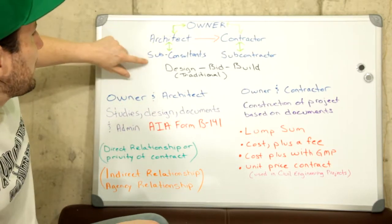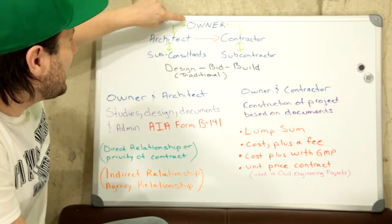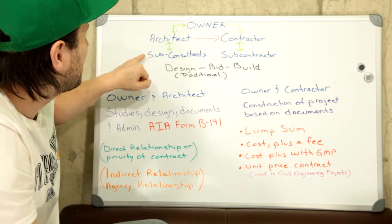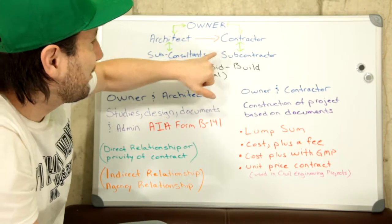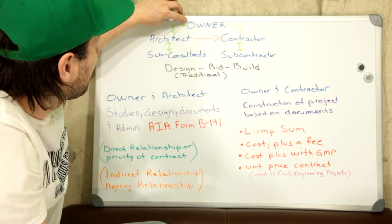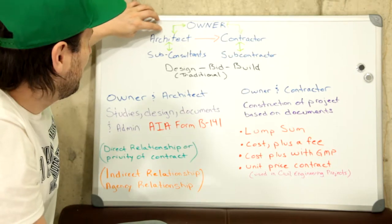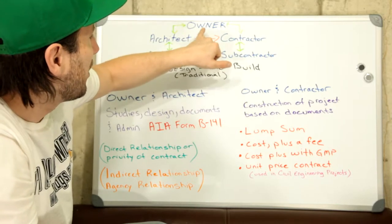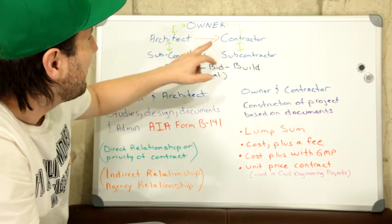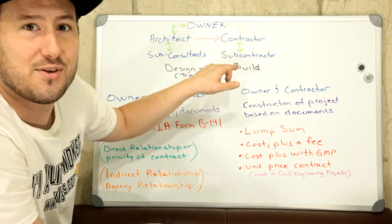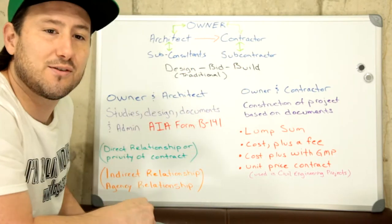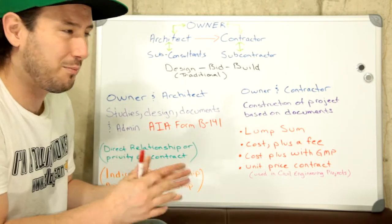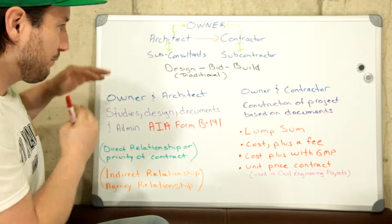So we have the owner, the architect, and the sub-consultants — and there's no contractual relationship between the owner and sub-consultants, or between the owner and subcontractors. For example, if a sub-consultant makes a mistake, the owner will go after the architect for damages — for money lost. Same thing if a subcontractor makes a mistake: the owner will go after the contractor for compensation, and then it's up to the contractor to go after the subcontractor. And the architect will go after the sub-consultant for compensation. This is just a basic outline, and it's already getting a little complex.